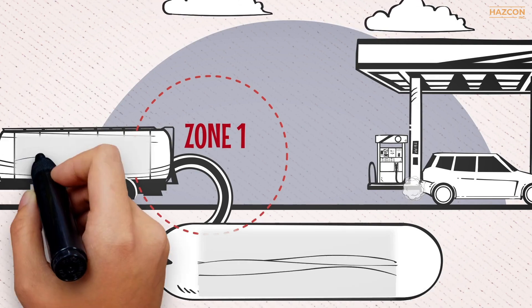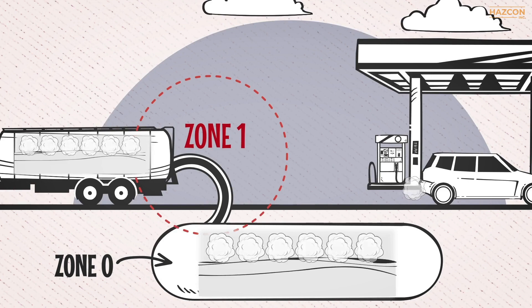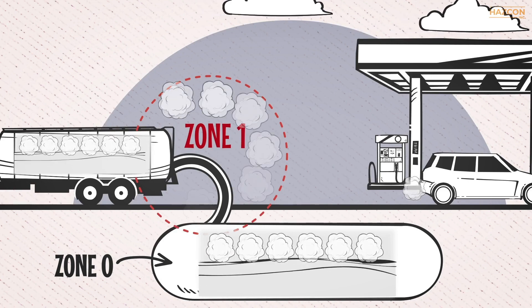In this illustration, we have a storage tank which contains a flammable liquid. When the flammable liquid is being transferred, the area around the vent of the tank is Zone 1.